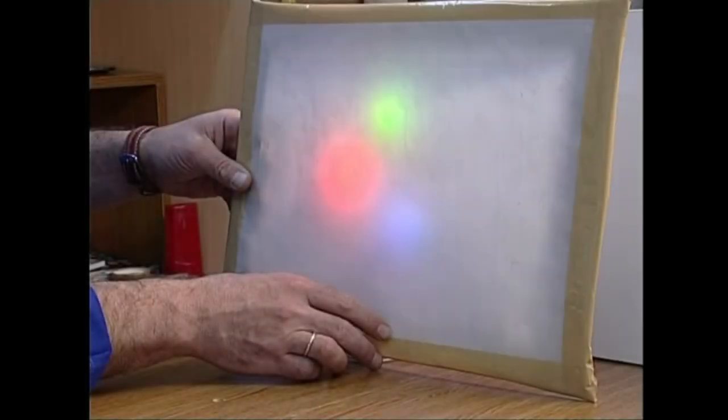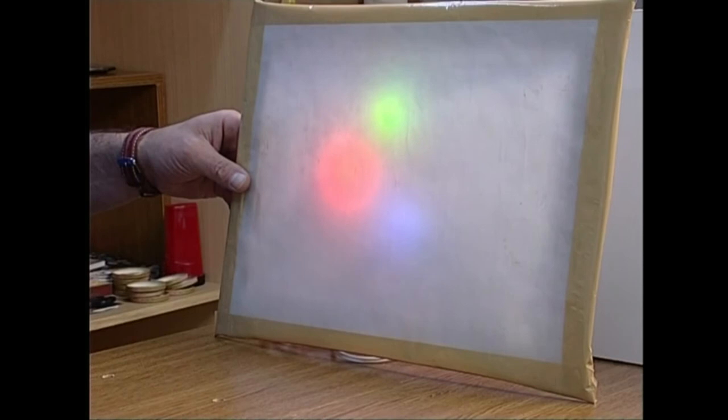Iru lanparen argiek bat egiten duten gunean, kolore zuriko argia ikusten dugu. Bi argi gainezartzen diren guneetan, beste koloretako argiak antzemandaitezke.